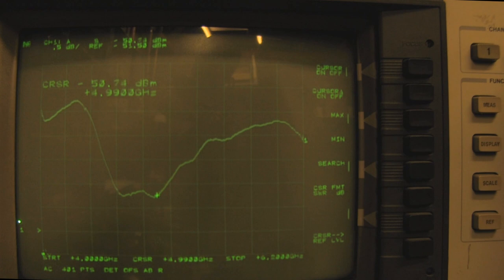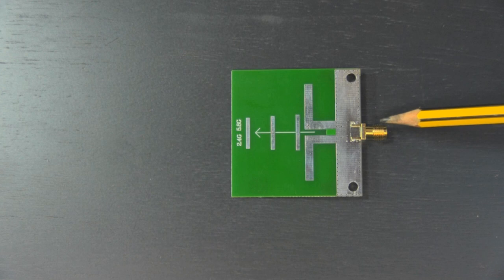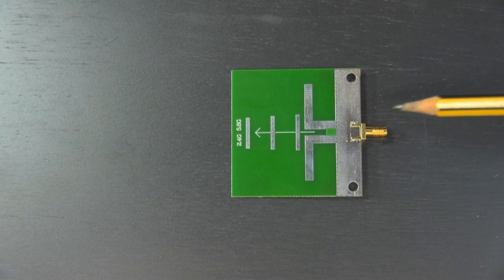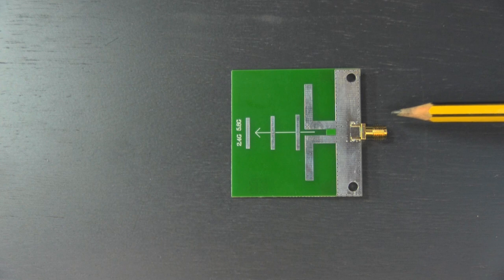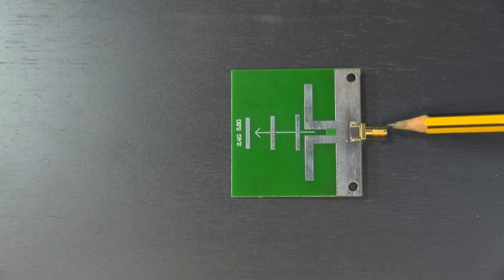As you saw on the network analyzer, it most certainly does not work for FPV at 5.8 gigahertz. When I find something like that, I end up questioning myself sometimes. I didn't mention it there, but I even reset the network analyzer and calibrated it again, checked all my connections and everything else just to make doubly sure it wasn't a mistake on my end.